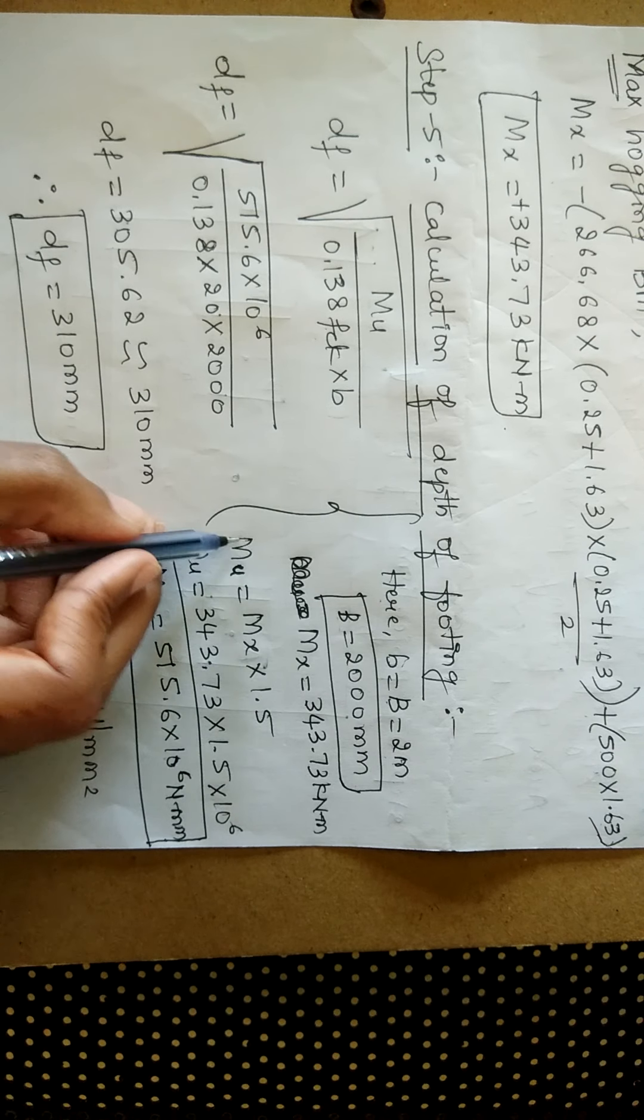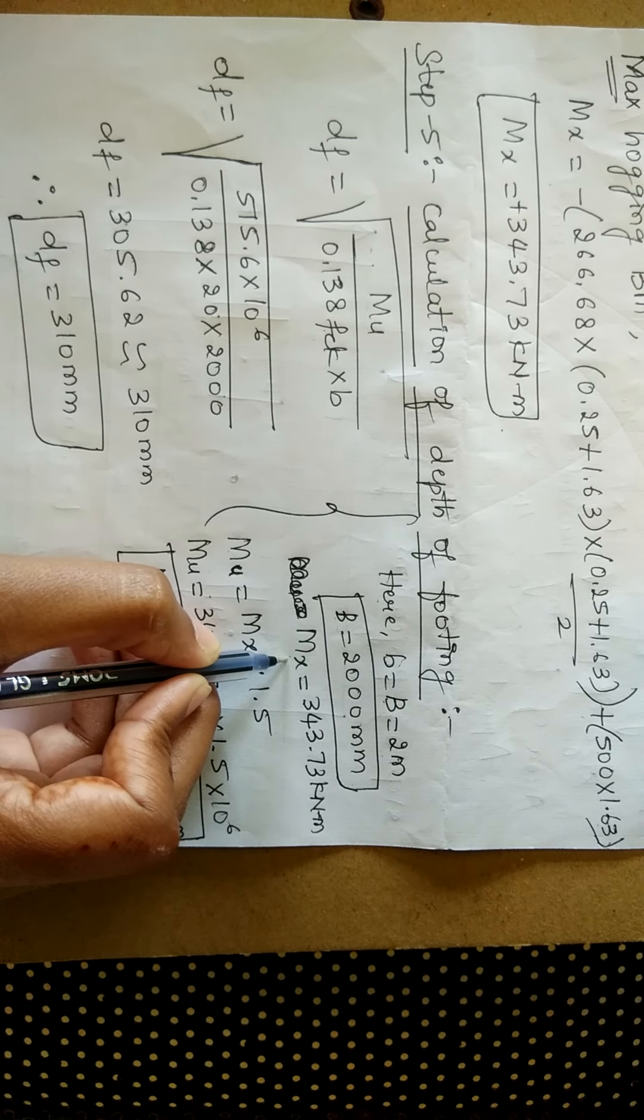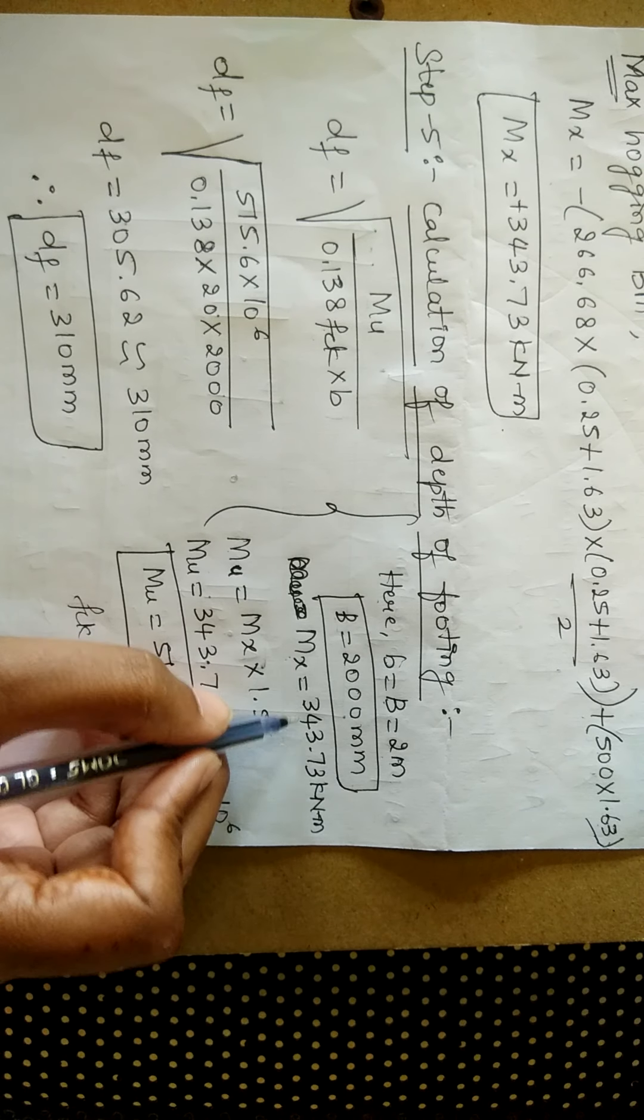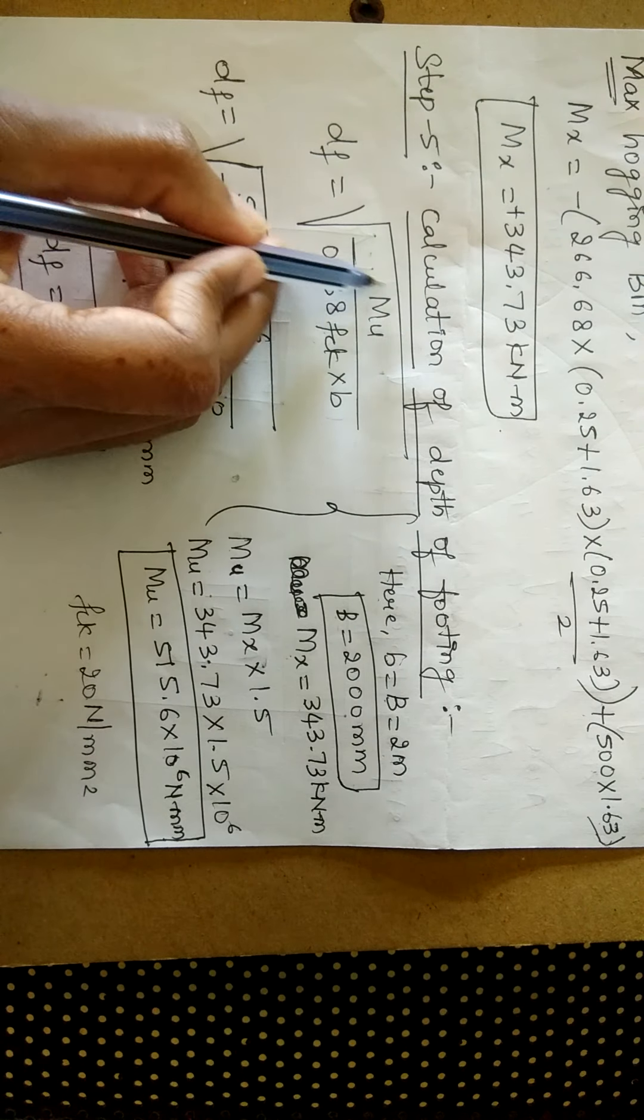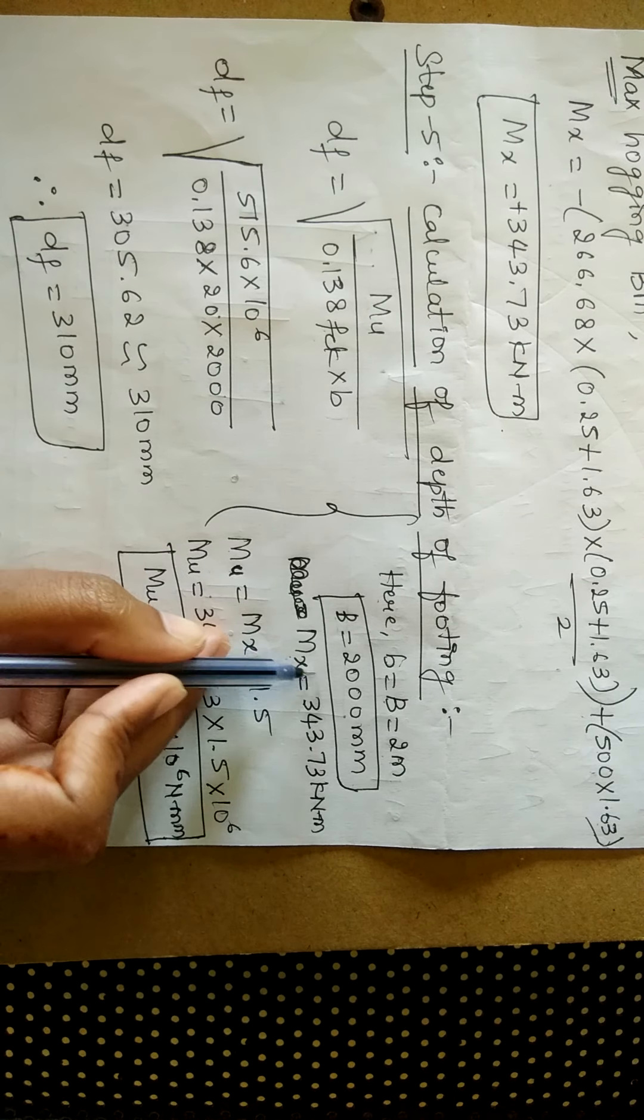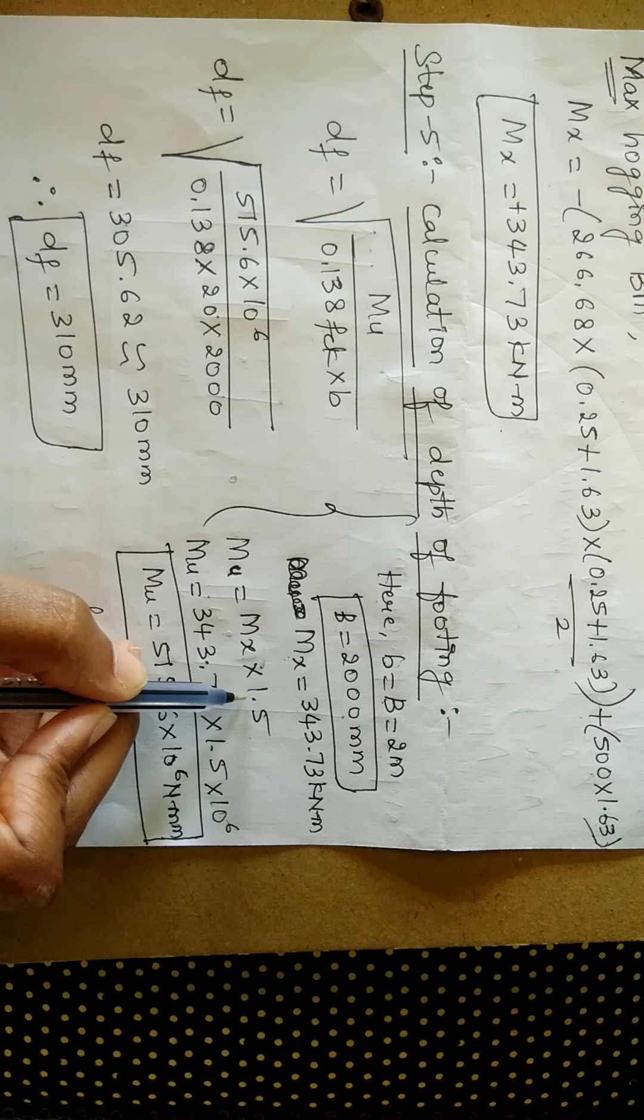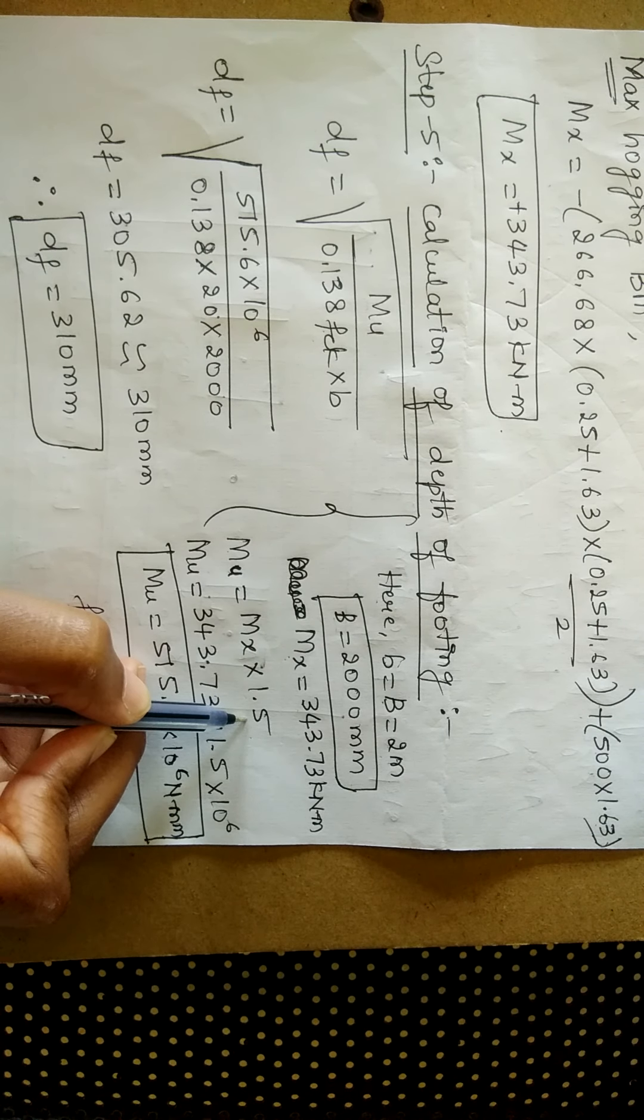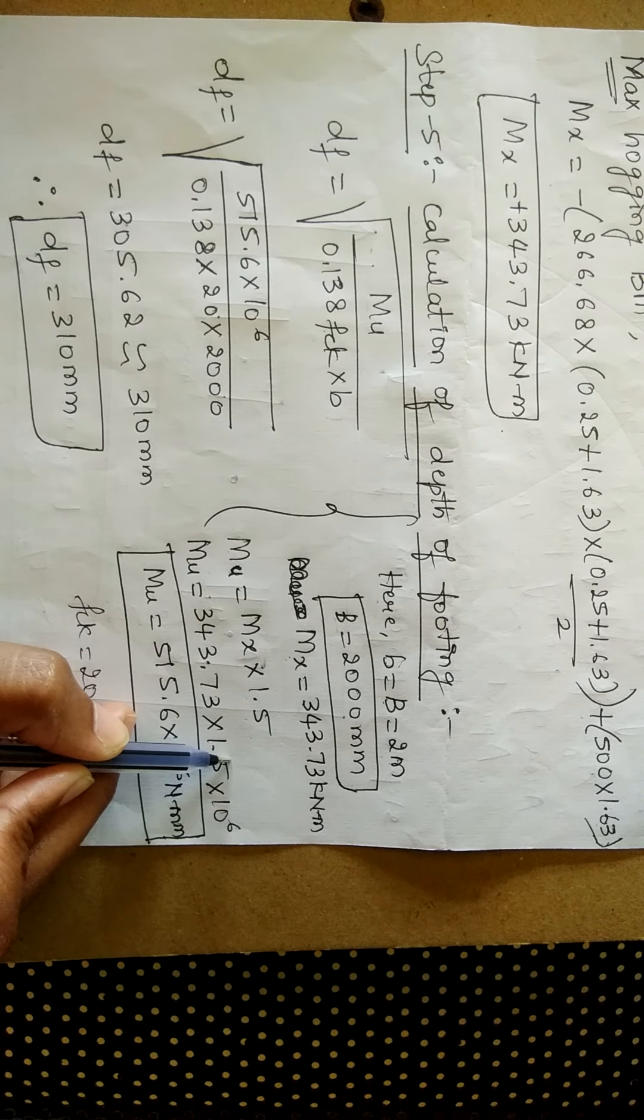So for that reason, I am considering the bending moment as mx here and the value of mx is 343.73 kilonewton meter. So we need to convert that in terms of ultimate moment. So for finding the ultimate moment, we have to multiply the working moment with the factor of safety and the factor of safety is always 1.5. mx is 343.73 into 1.5.